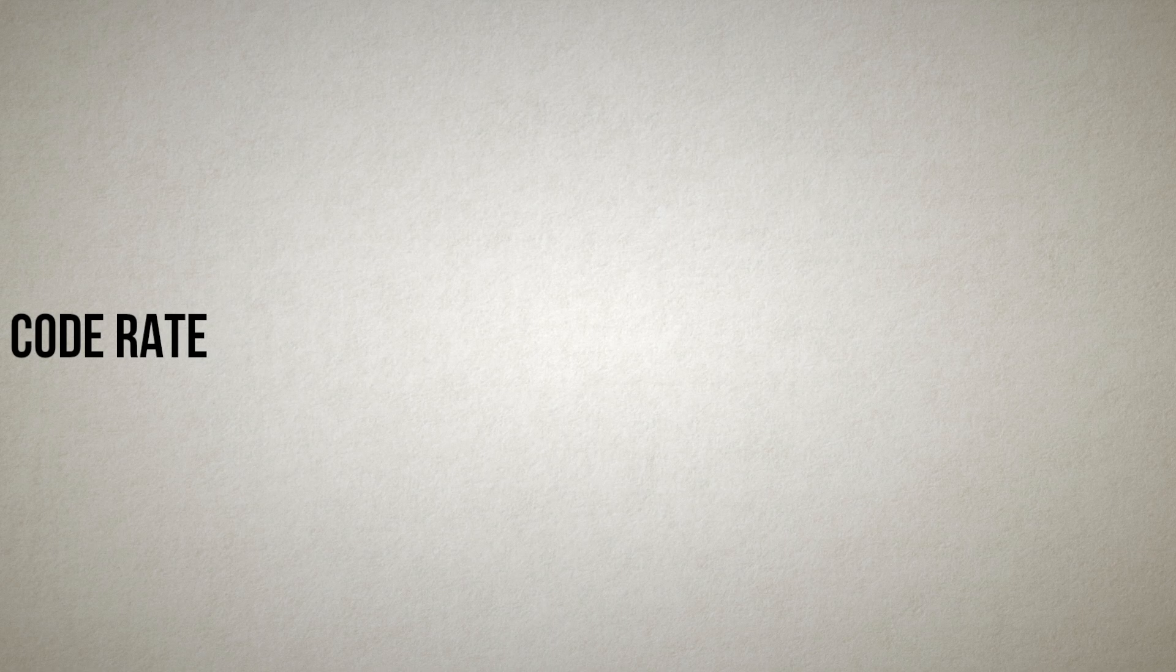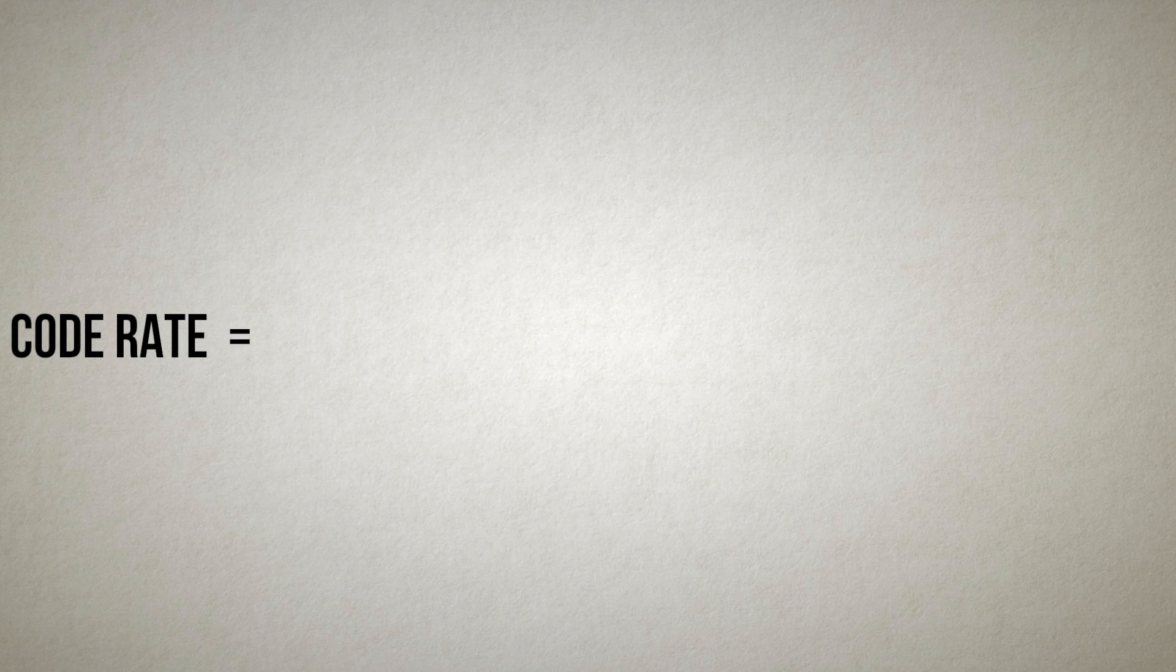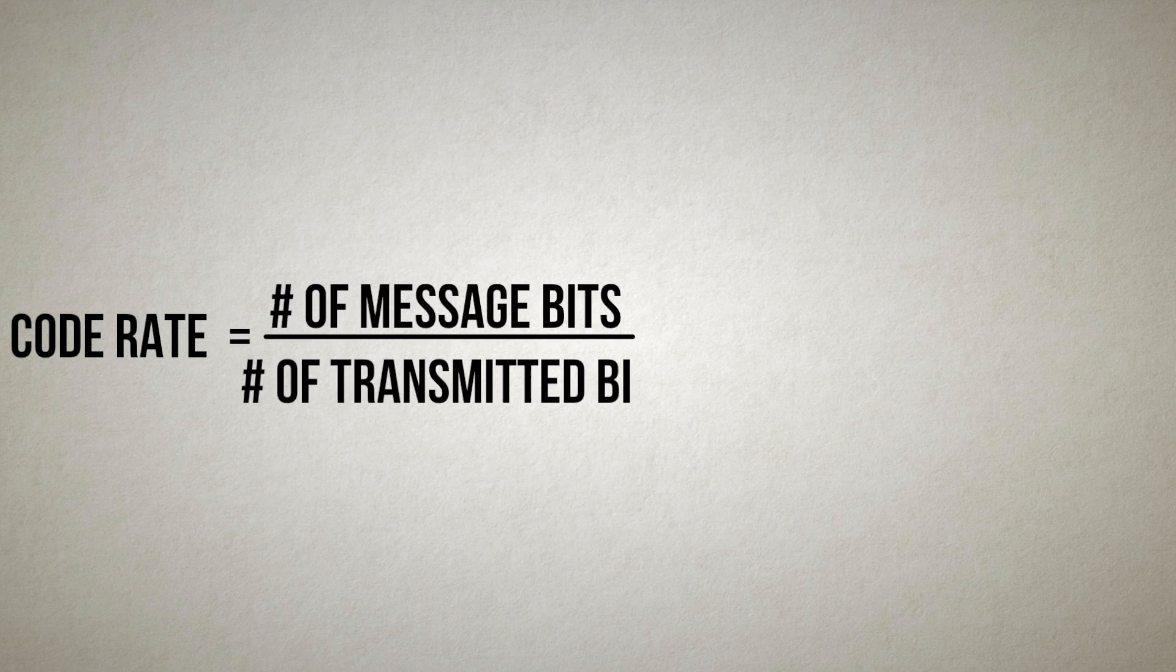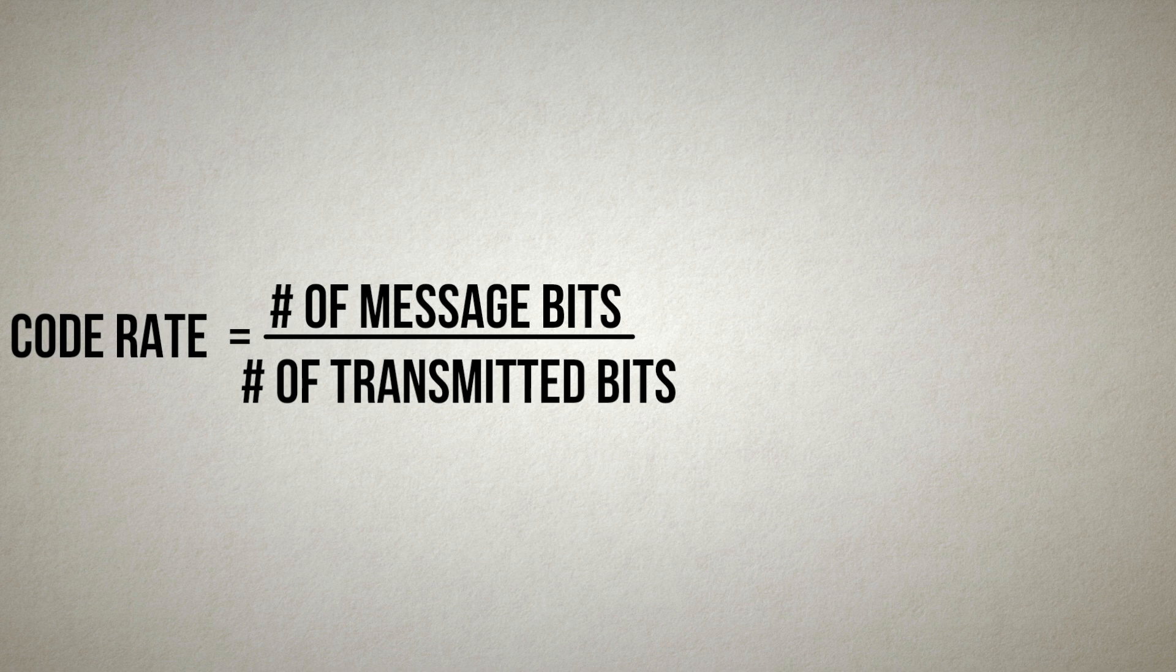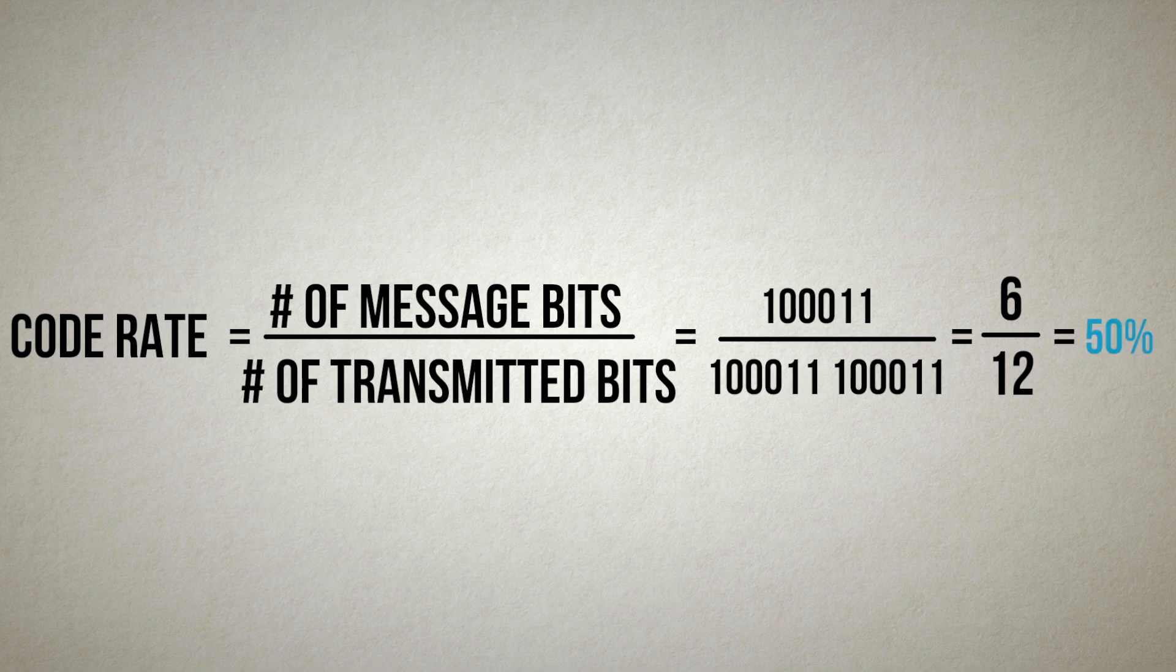We express this efficiency issue in terms of code rate, where code rate is the original number of message bits divided by the total number of transmitted bits. Thus, the code rate in this repetition scheme is 50%. That means half of the bits are needed to describe our original message, and the other half are there to protect the message.